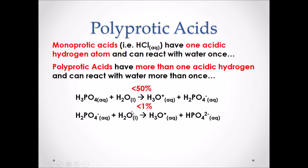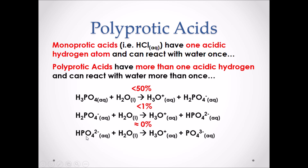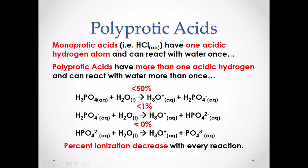That second reaction occurs less than 1%. The acid still has one more hydrogen remaining, so the final reaction has HPO₄²⁻ reacting with water to form H₃O⁺ and PO₄³⁻. There are no more hydrogens remaining, so there cannot be any more reactions. This last reaction barely occurs at all — almost equal to zero. The percent ionization decreases with every reaction: less than 50%, then less than 1%, then nearly zero.